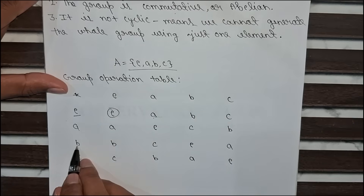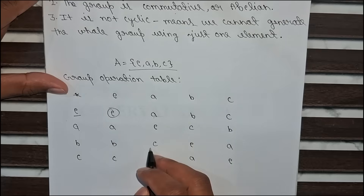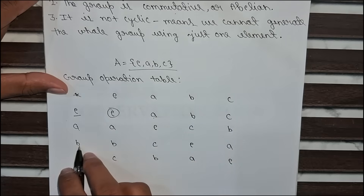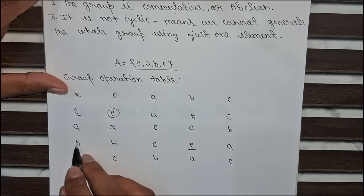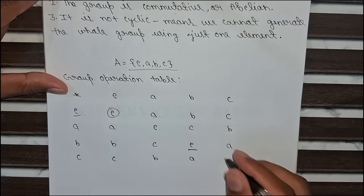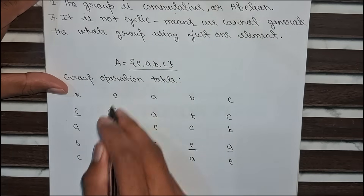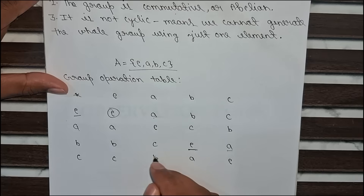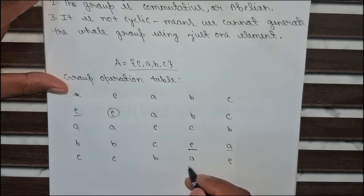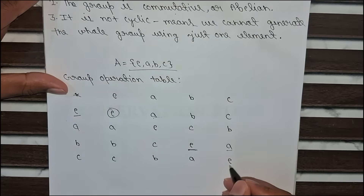In the third column: b × e = b. Then b × b gives the identity element itself, so b × b = e. And b × c gives the remaining element a. Now for c: c × e = c, c × a gives the missing element b, c × b gives a, and c × c gives its own inverse, which is e.